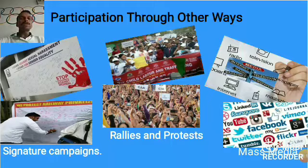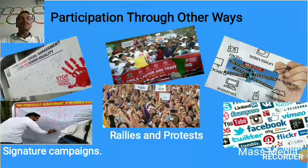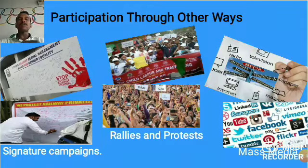The next form of participation is rallies and protests. A recent example is the CAA bill — the Citizen Amendment Act. The government made changes in the Citizen Amendment Act, and the Citizen Amendment Bill was presented in parliament to bring changes to the Citizen Amendment Act. People did protests and rallies against that decision.